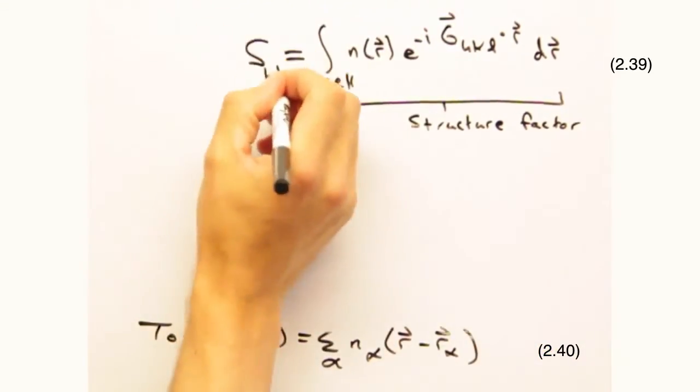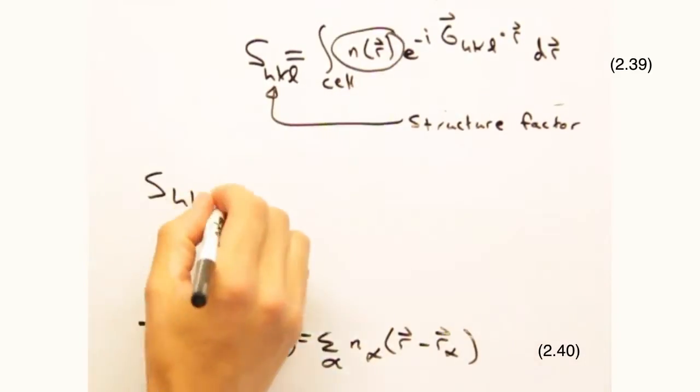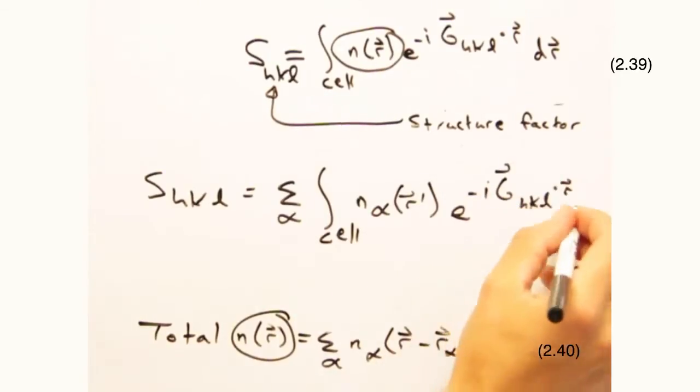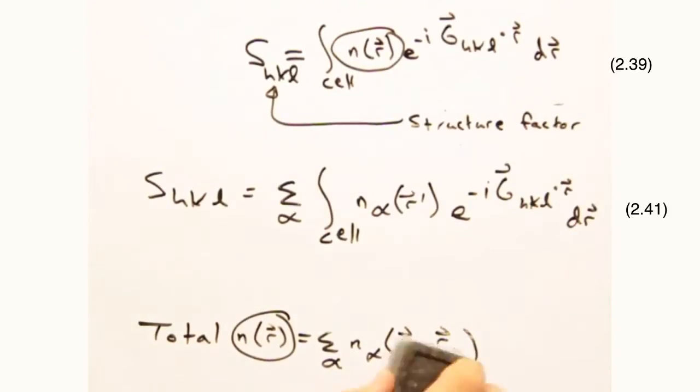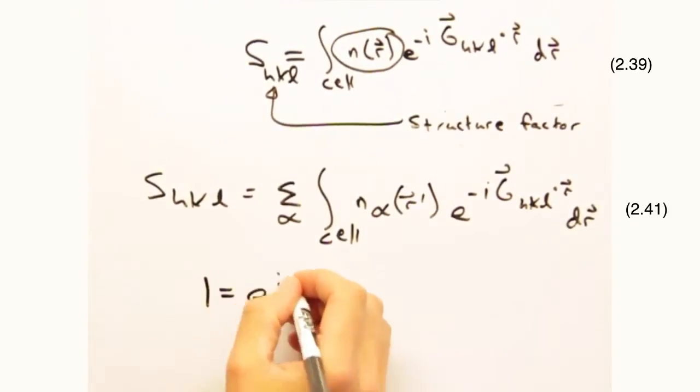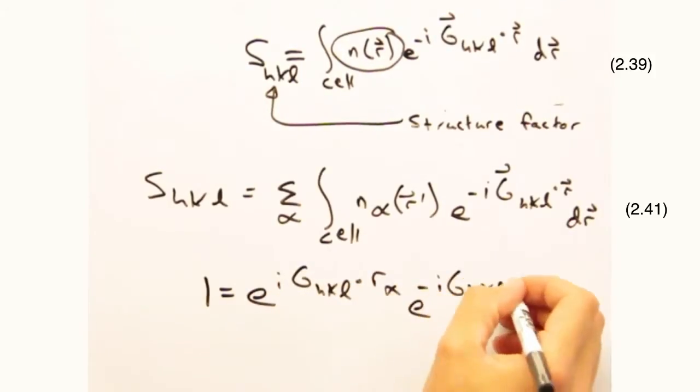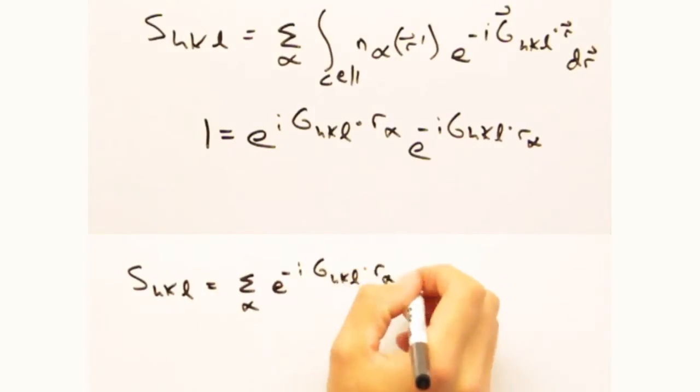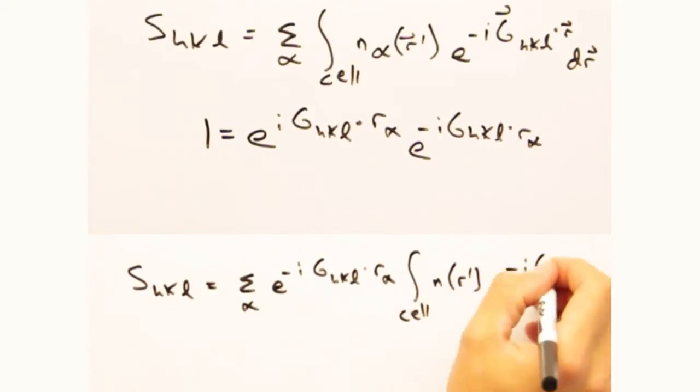Let's first rewrite the structure factor equation. Now let's put our new n(r) back into this equation and effectively multiply by one. Why would we want to do that? I know it's not inherently obvious,